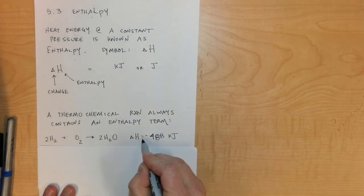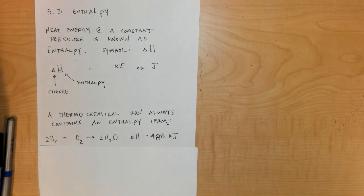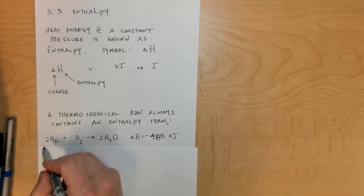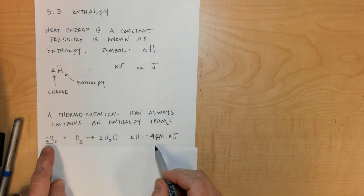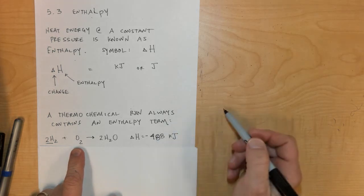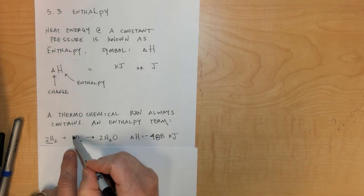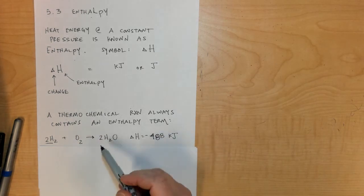This delta H with a positive or negative sign, a numerical value, and units of kilojoules indicates that for every two moles of H2 that are combusted, this amount of energy will be released. For every one mole of O2, this amount of energy will be released.